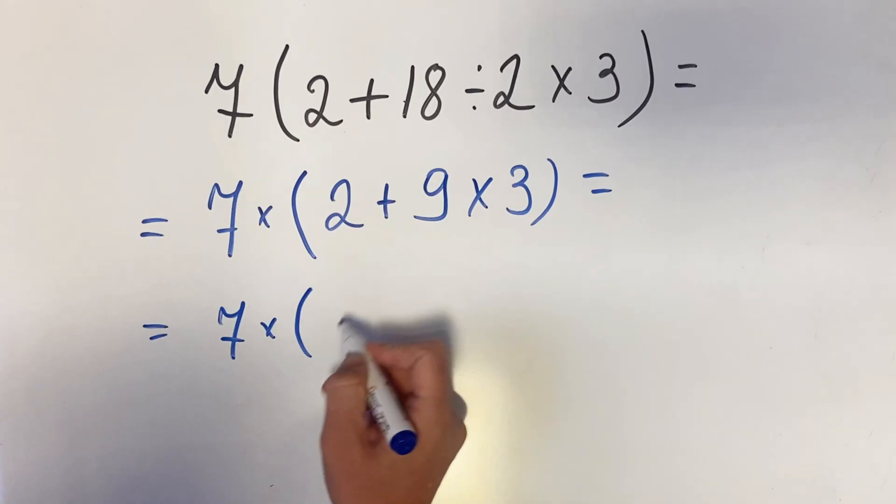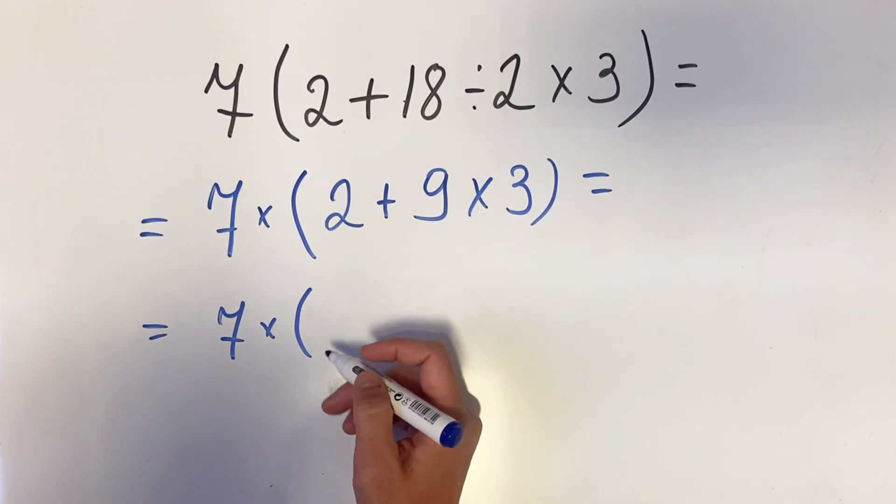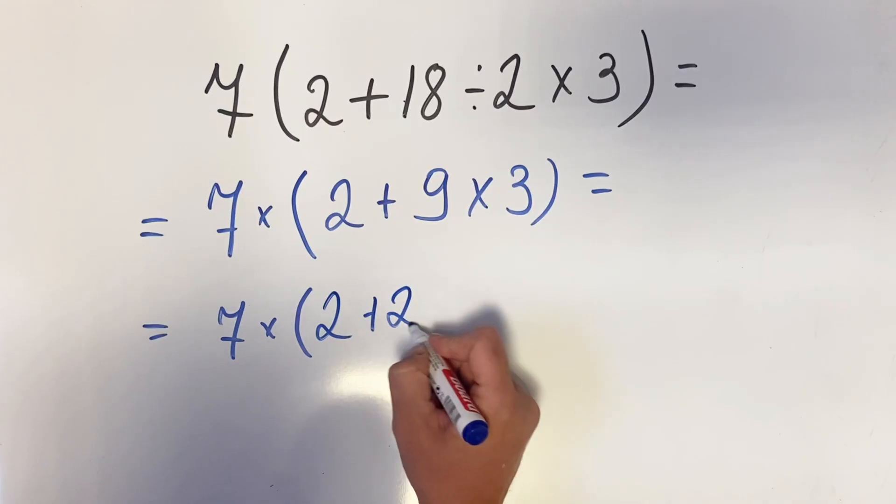9 multiplied by 3 is 27. So we have 2 plus 27.